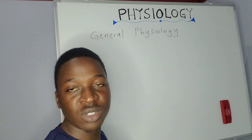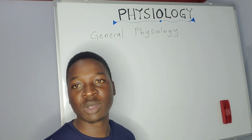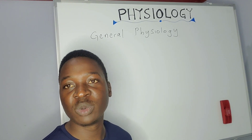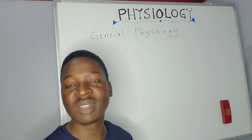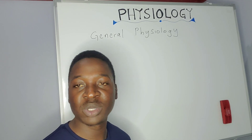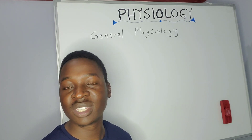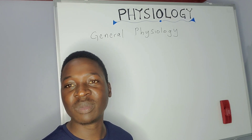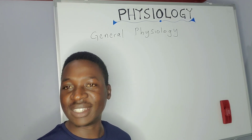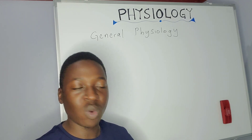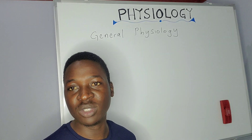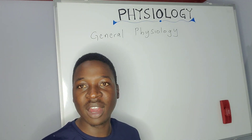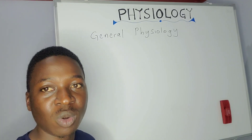General physiology is just one of the areas we're going to be looking at. After general physiology, we shall move system by system — for example, the respiratory system, the gastrointestinal system, the nervous system, endocrinology, and others like that.